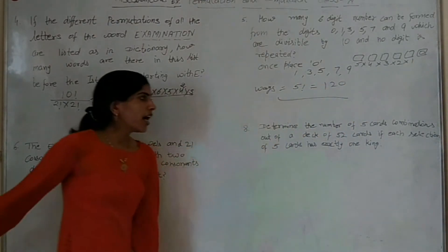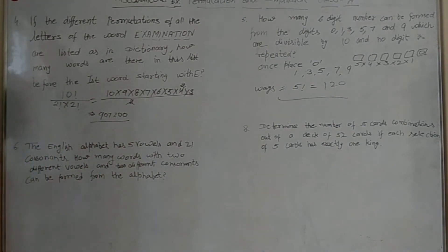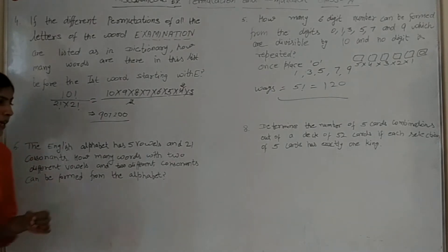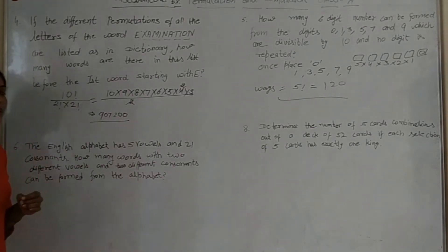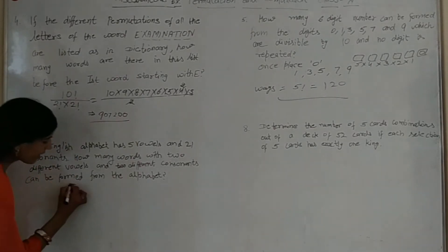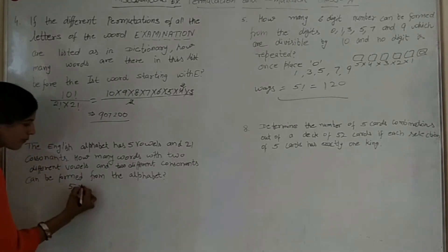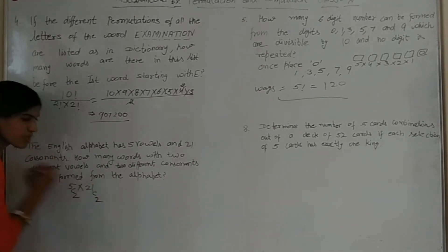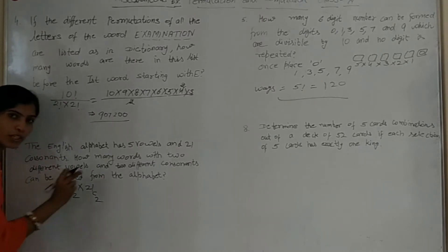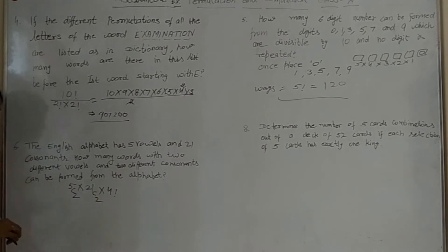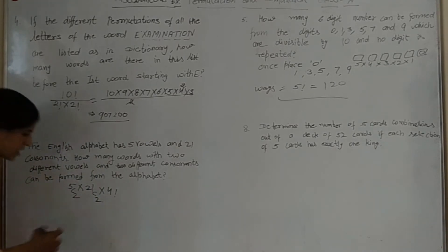Ab aajao question number 6: English alphabet has 5 vowels and 21 consonants. How many words with 2 different vowels and 2 consonants can be formed? 5 vowels mein se lene hain 2, aur 21 consonants mein se lene hain 2. Theek hai? 2 vowels and 2 consonants — kitne characters banenge? 4.